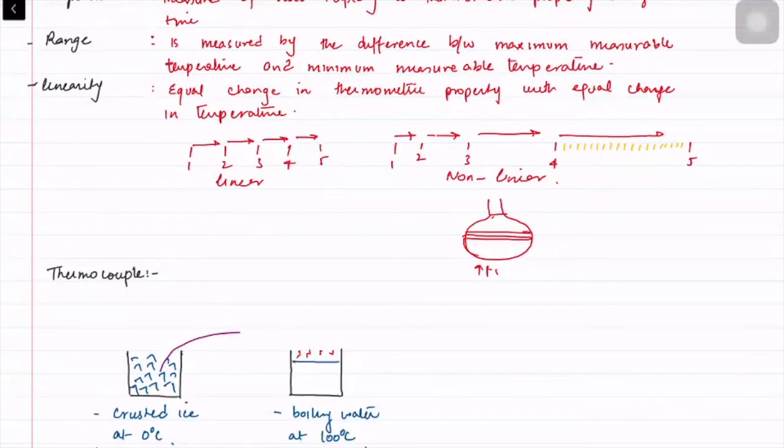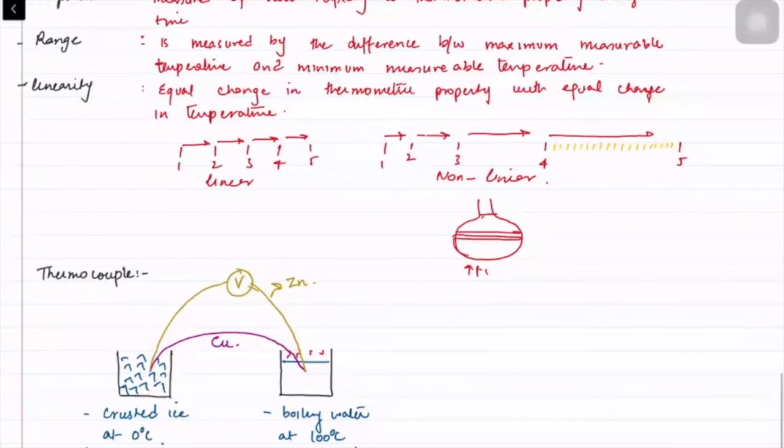Now in a thermocouple we use two wires. One goes from crushed ice to boiling water - that wire is copper. The other wire is connected to a voltmeter - let's suppose we've taken zinc. So we have taken two different wires.